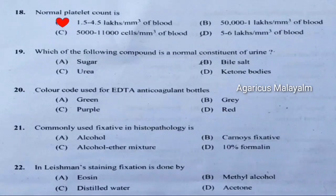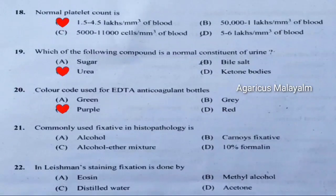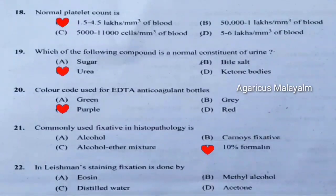Nineteenth question: Which of the following compound is a normal constituent of urine? Correct answer is option C — urea. Twentieth question: Color code used for EDTA anticoagulant bottle. Correct answer is option C — purple. Twenty-first question: Commonly used fixative in histopathology is. Correct answer is option D — 10% formalin.